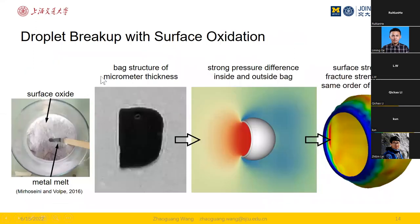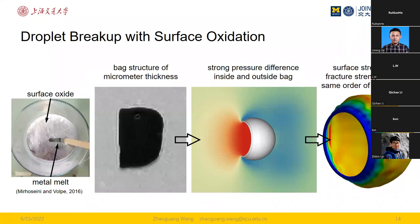Now let's move to the second feature: droplet breakup with metal surface oxidation. For most liquid metals, there is a layer of oxide film at the surface with a thickness of only a few nanometers. During droplet breakup, as the surface deforms constantly, the developed oxide layer is expected to be thicker — perhaps tens of nanometers. For the bag structure, its thickness is expected to be around one micrometer, which is thin enough that the effect of the surface oxide cannot be neglected when comparing one micrometer to tens of nanometers.